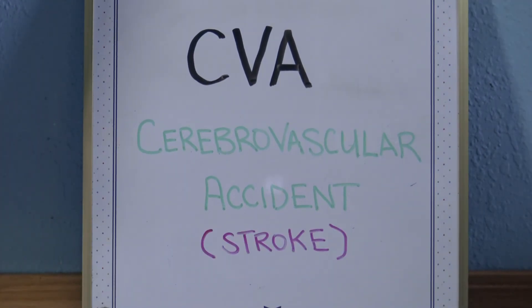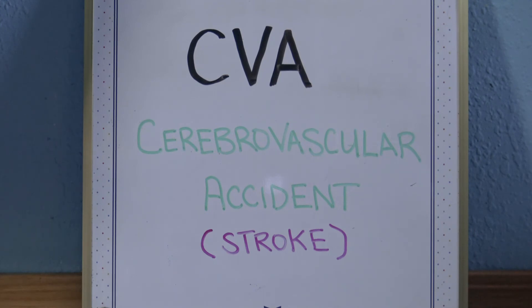CVA — CVA is cerebrovascular accident, so it's a stroke. It involves loss of blood flow to a part of the brain.